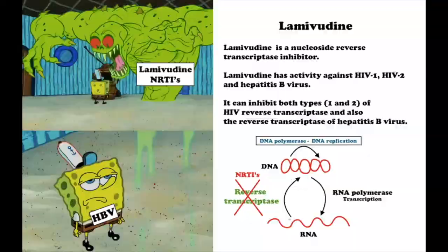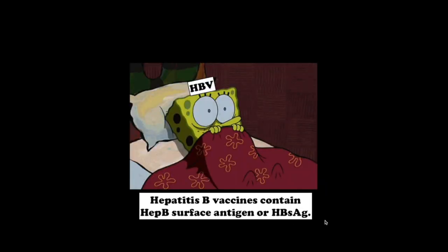Prevention: Hepatitis B is a vaccine-preventable liver infection. The hepatitis B vaccine contains HBsAg, a protein from the surface of the hepatitis B virus. All infants should receive the vaccine as soon as possible after birth, preferably within 24 hours, followed by 2 or 3 doses at least 4 weeks apart to complete the vaccination series. Protection lasts at least 20 years and is probably lifelong.